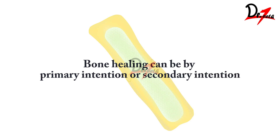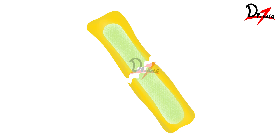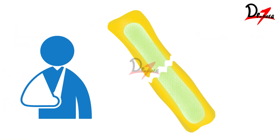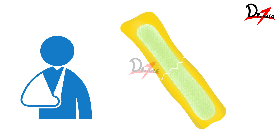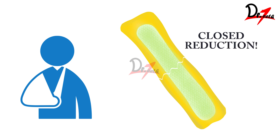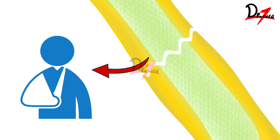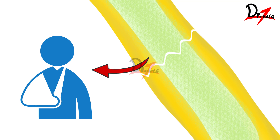Let us begin with secondary healing first because this is basically the natural way of healing. We don't approximate the fractured fragments very close so that there is direct formation of bone. Suppose we have a patient with a limb fracture — what does a doctor usually do? He approximates the two pieces together without surgery, reduces the two fragments, and then gives a plaster. So there are little micro gaps and little movement in the fragments, and that will heal by secondary intention.